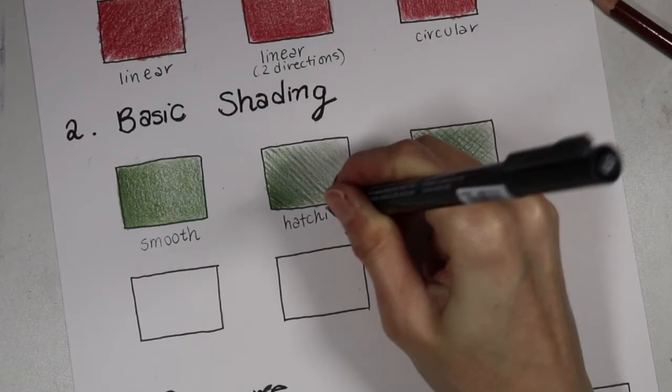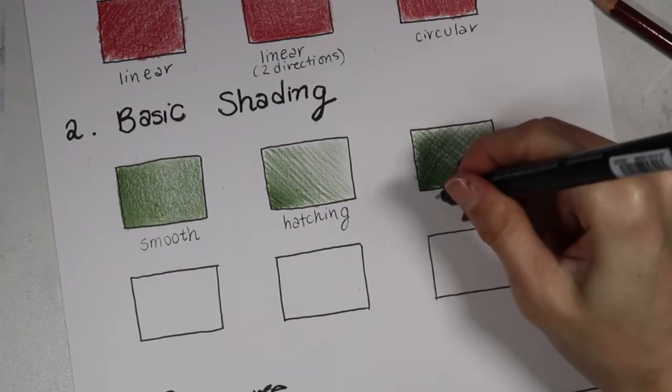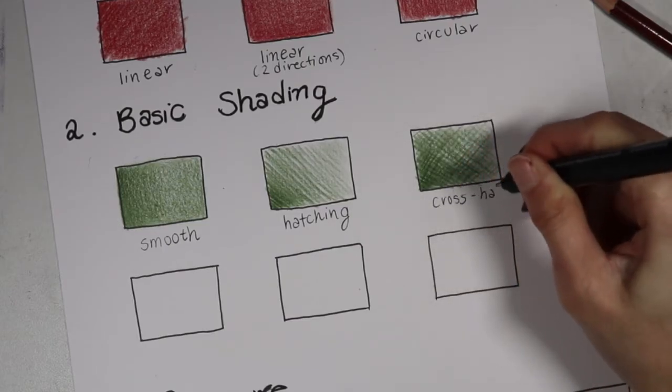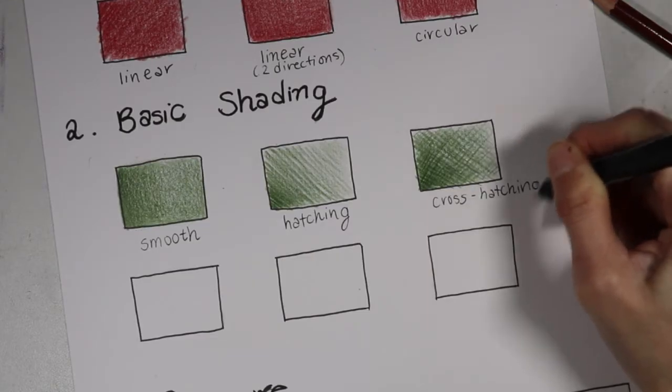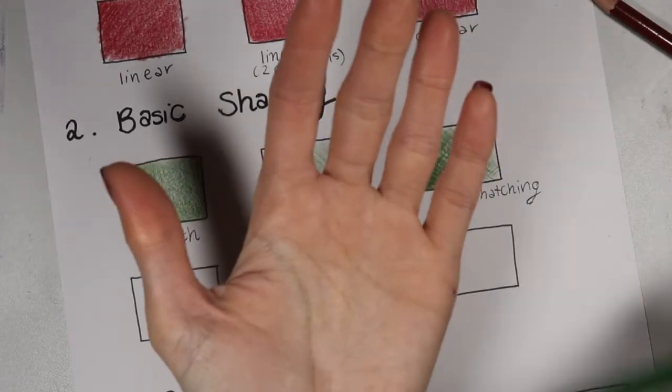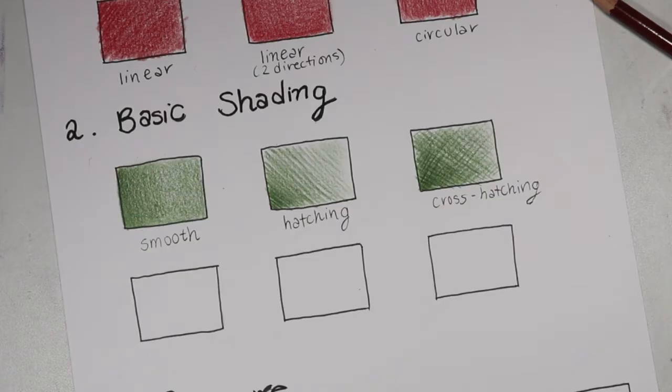So these are some shading methods that we all kind of learned how to do with graphite pencil. Personally, I don't really like to do hatching and cross hatching with colored pencil. Also, my pencil is getting blunt, so I'm going to go ahead and sharpen it, because it's really annoying to be coloring with a blunt colored pencil.